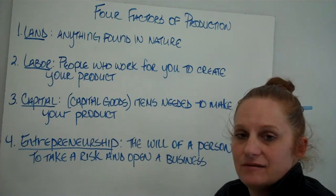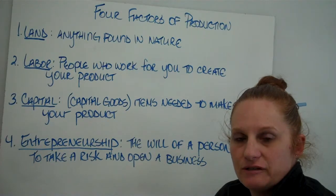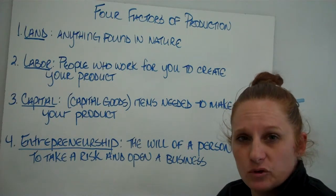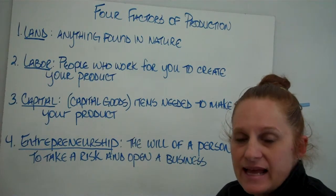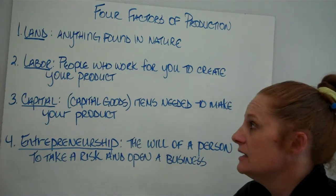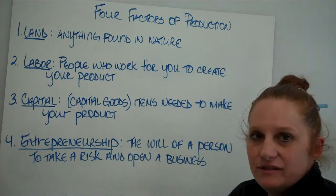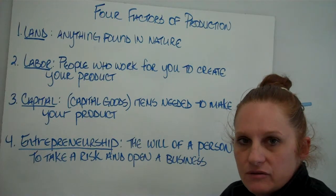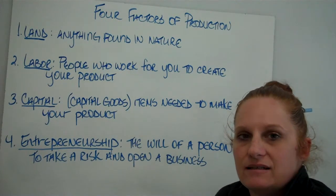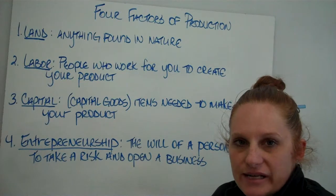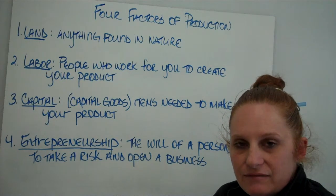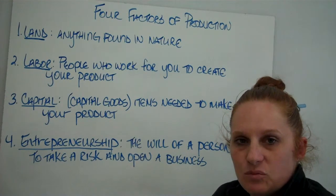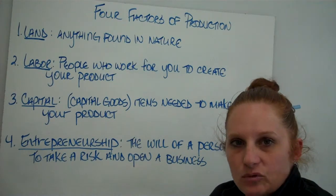The next factor of production is capital — capital goods, if you want to be very specific. Capital goods are all the items needed to create your product, so anything you use to make something else. The hammer and nails, the building where your factory is, the trucks that transport your product — all capital goods.